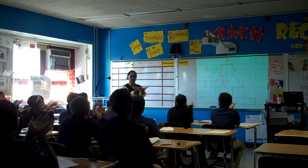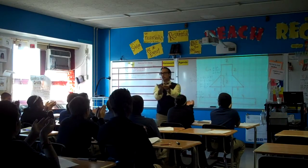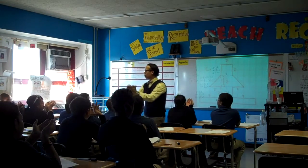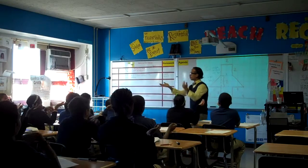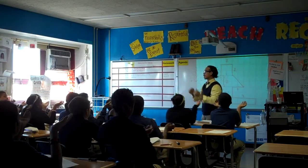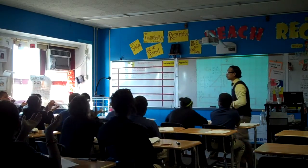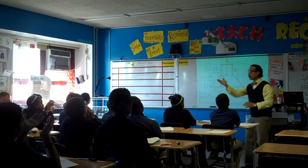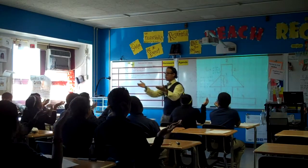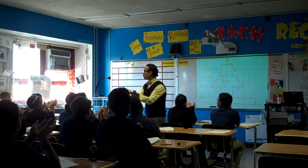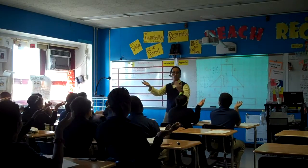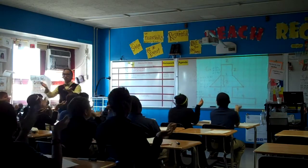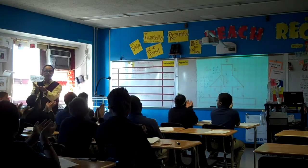One pint, two pints — one quart. How many ounces do I have in one quart? Thirty-two fluid ounces. One quart, two quarts — half a gallon.